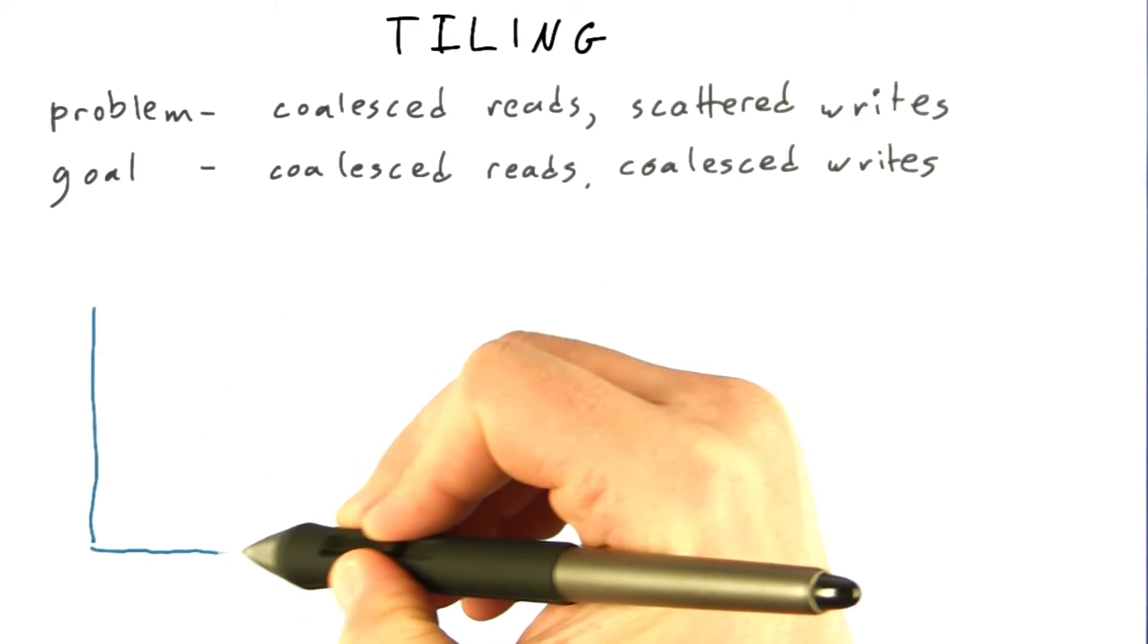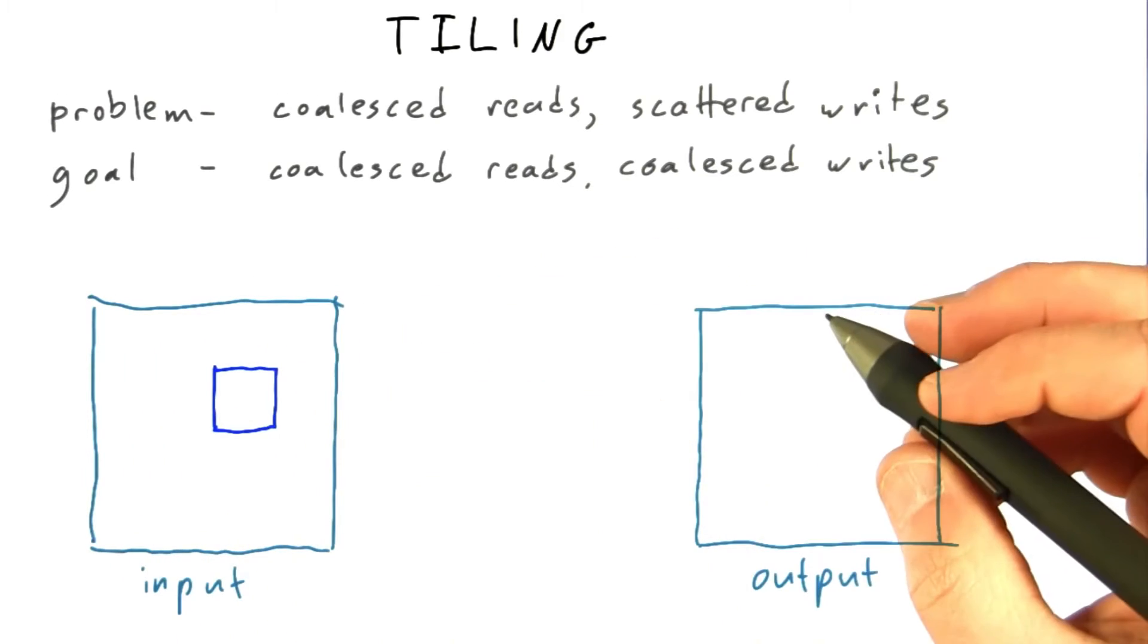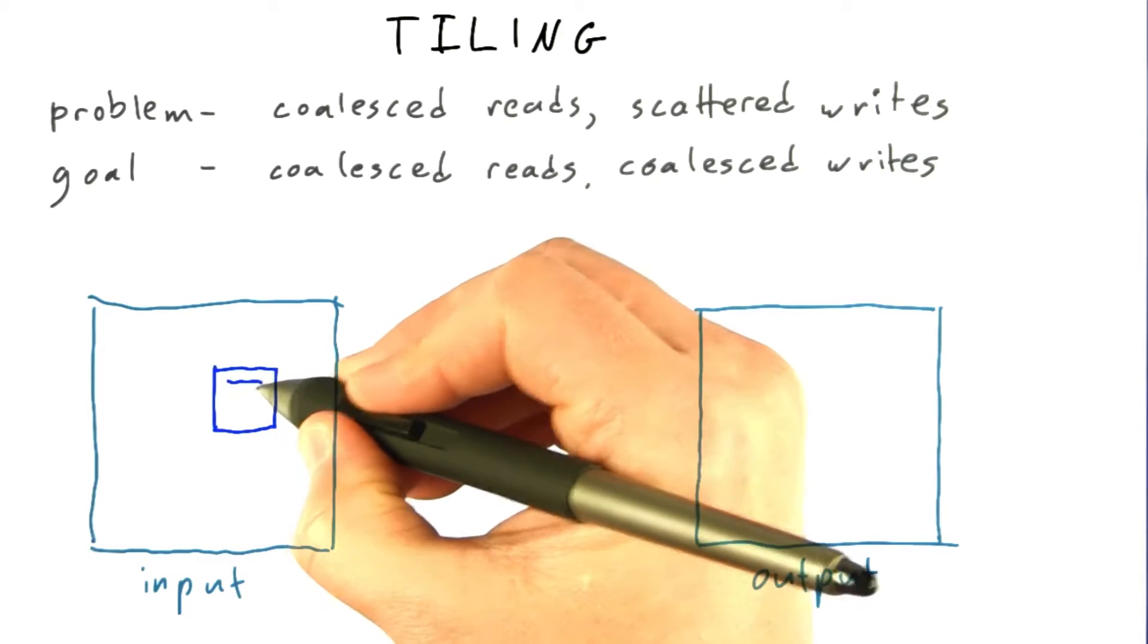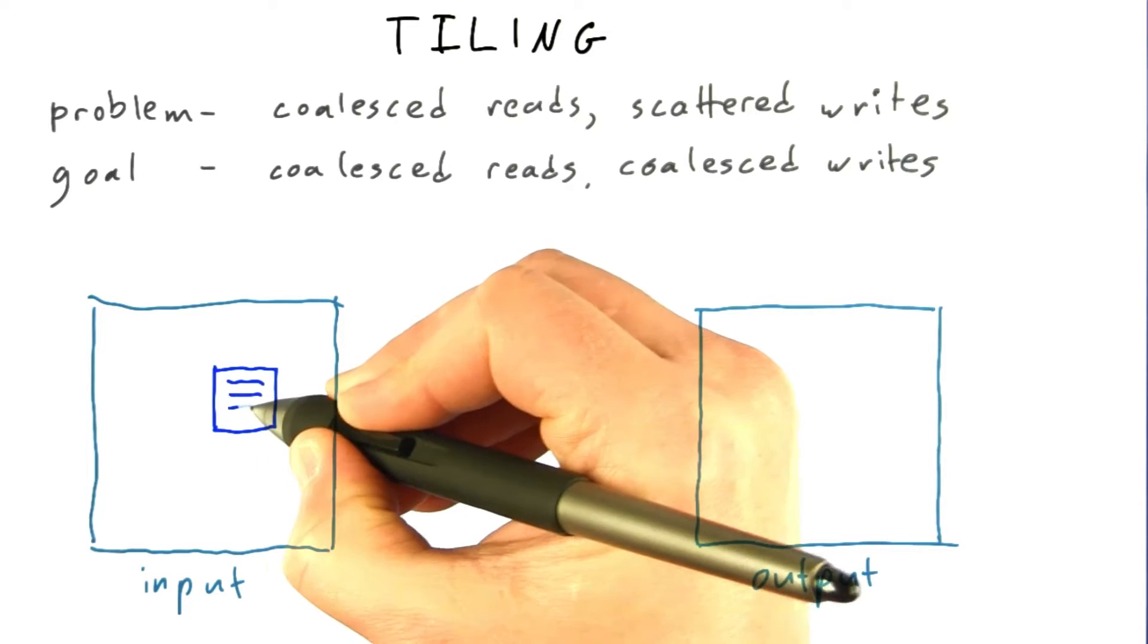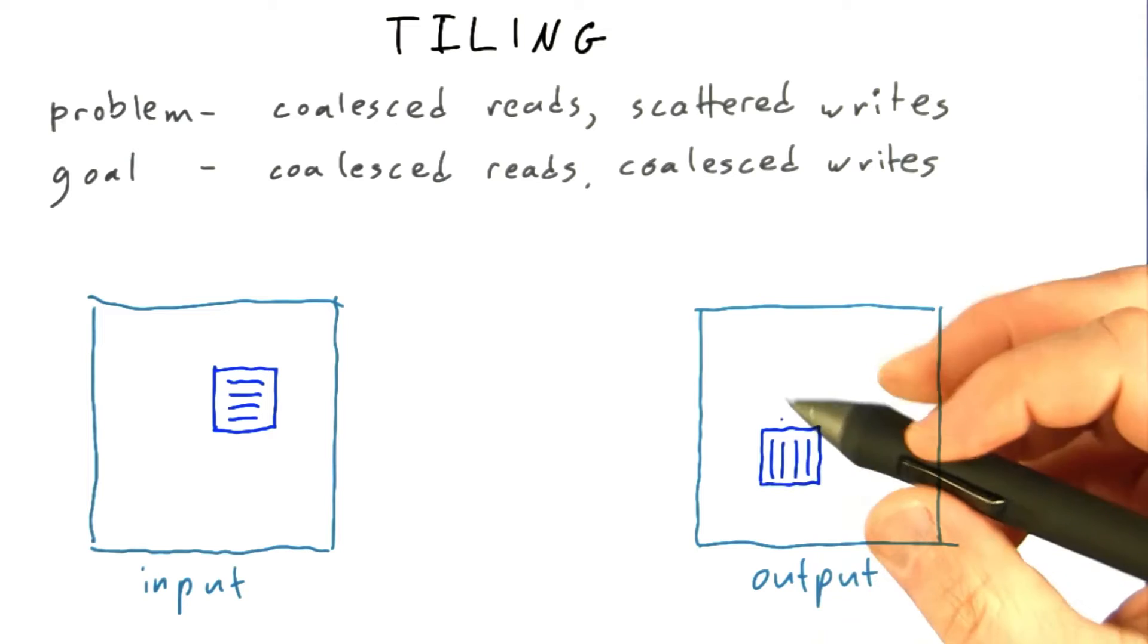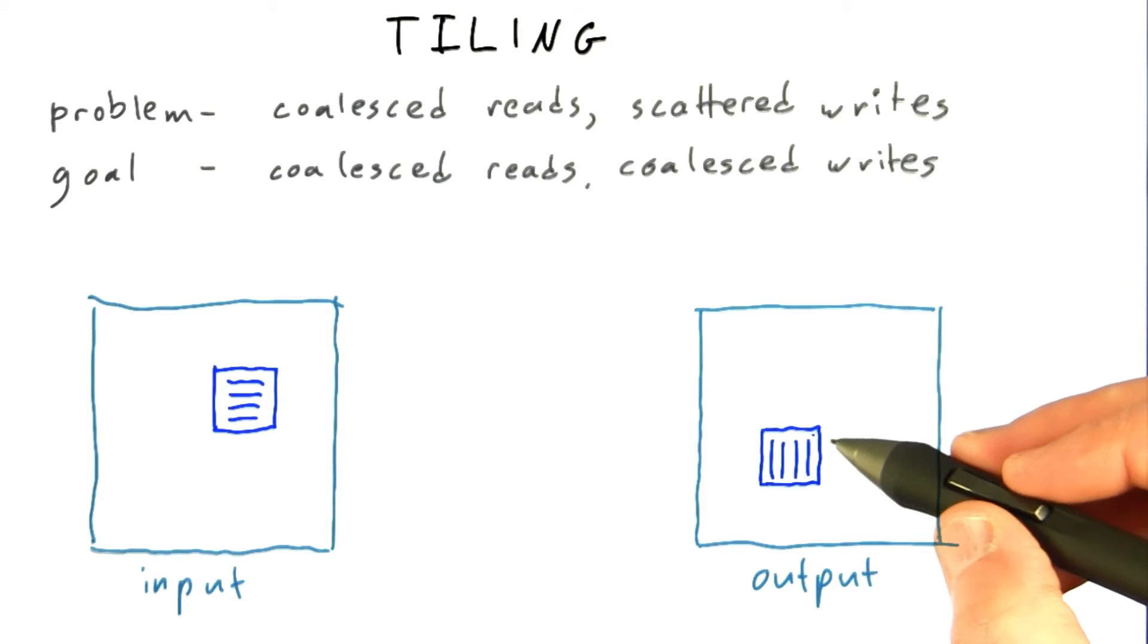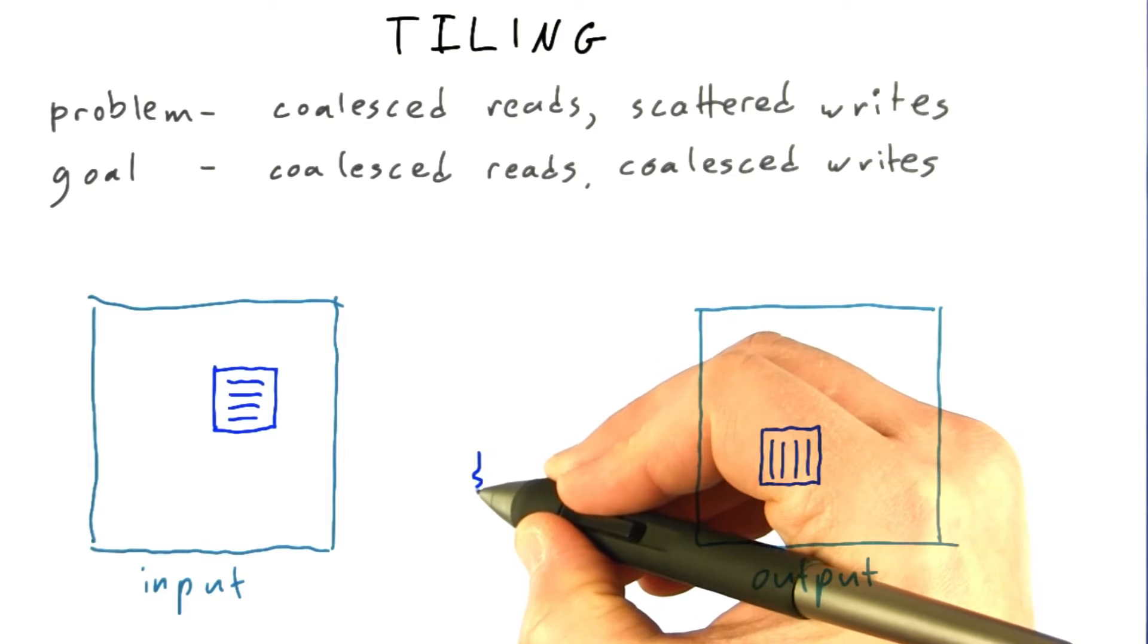The solution is a really important general strategy, so I'll spend a little time on it. The idea is we're going to take a tile of the input matrix at a time, transpose it, and copy it into its transposed location in the output matrix. This is going to be the job of a single thread block.